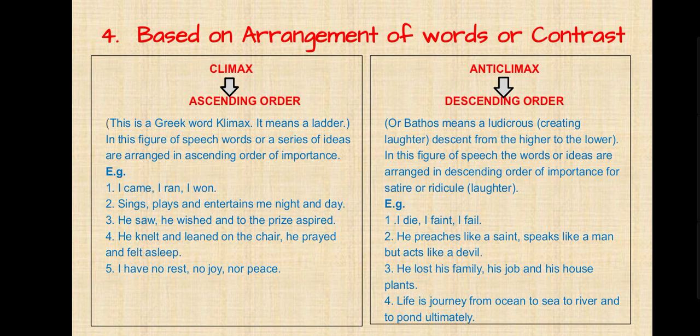Fourth type: based on arrangement of words or contrast. Climax — a Greek word meaning a ladder — ascending order. In this figure of speech, words or a series of ideas are arranged in ascending order of importance. Examples: 'I came, I ran, I won.' 'Sings, plays, and entertains me night and day.' 'He saw, he wished, and to the prize aspired.' 'He knelt, he leaned on the chair, he prayed, and fell asleep.' 'I have no rest, no joy, nor peace.'